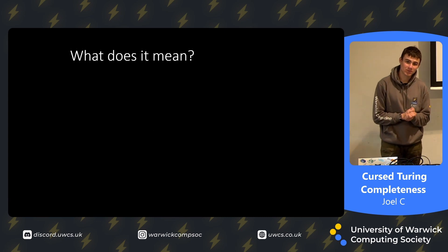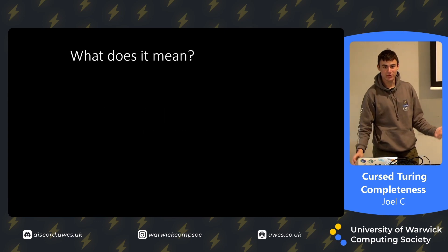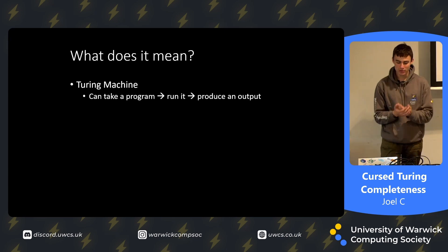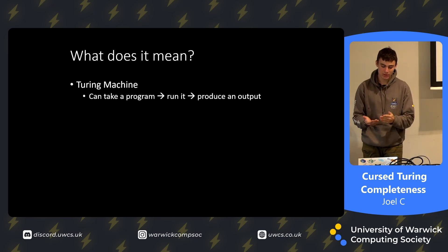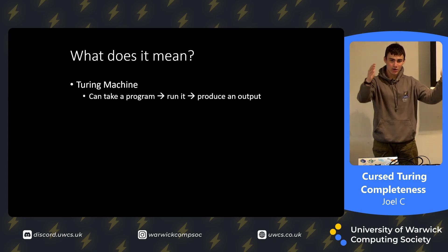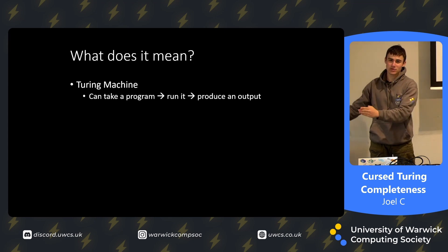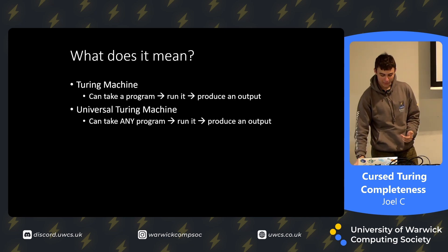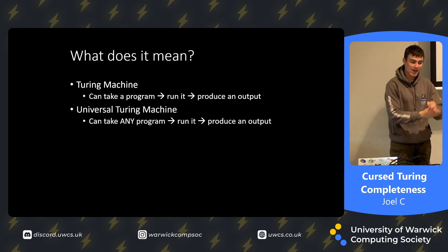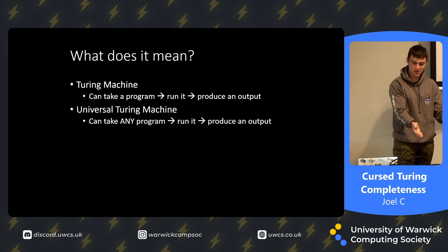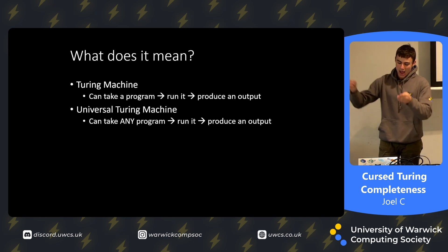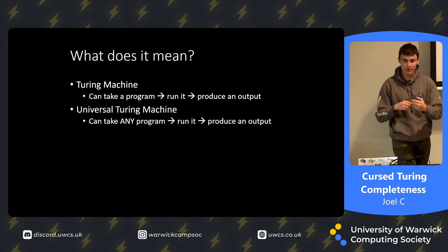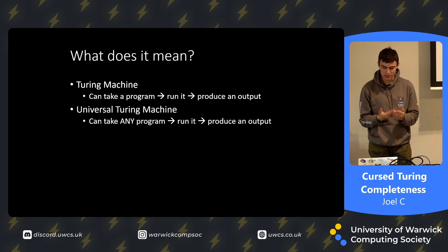So what does it mean to be Turing complete? Well, to be Turing complete you need to be able to simulate a Turing machine. A Turing machine is something that can take a program, run it, and then produce an output. Then you have a universal Turing machine which can take any program — not just a specific one — run it, and produce an output, meaning it can compute anything that is computable.